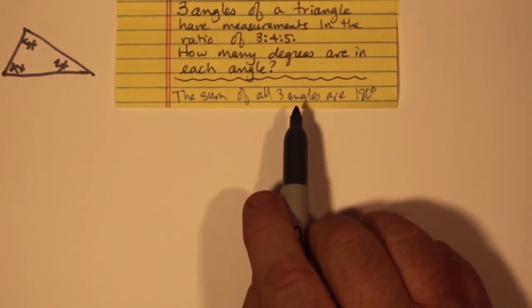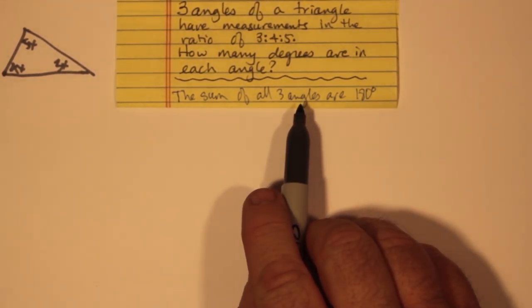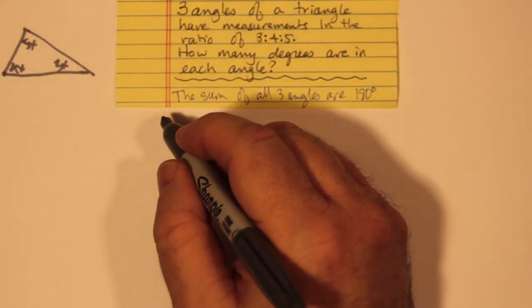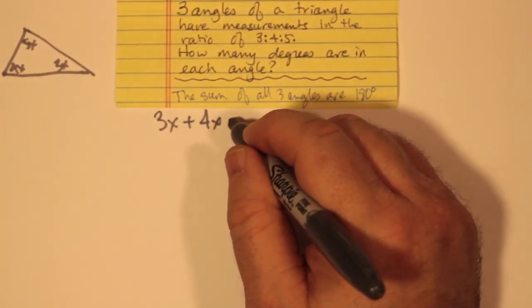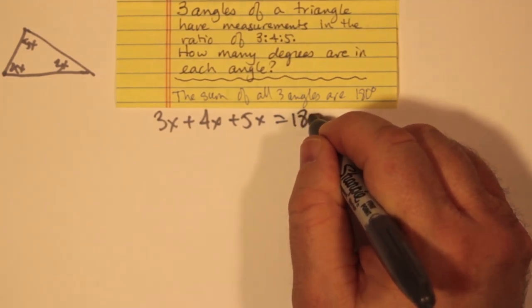And to help us, we have the fact that the sum of all three angles is 180 degrees, which means that 3x plus 4x plus 5x is actually 180.